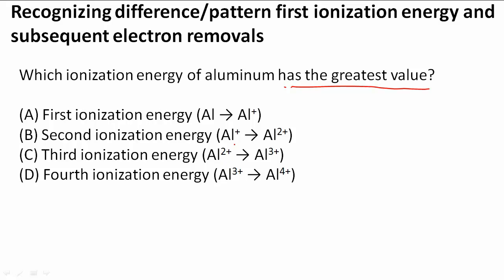As we know, the second ionization energy is always greater than the first. That holds true as you go down. Third ionization energy is greater than the second and the first, and the fourth is the greatest ionization energy.